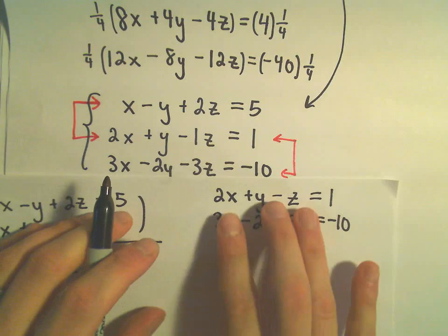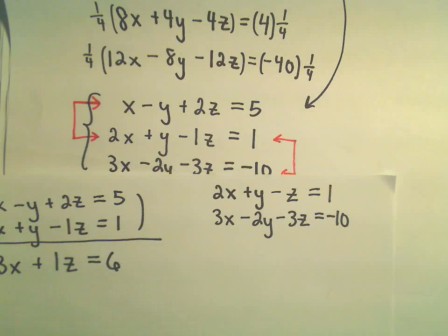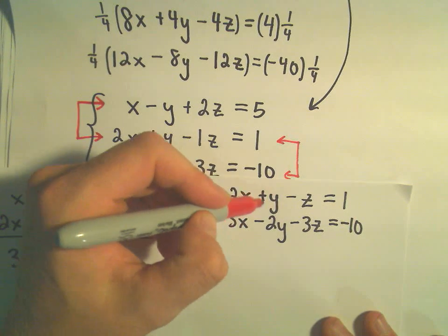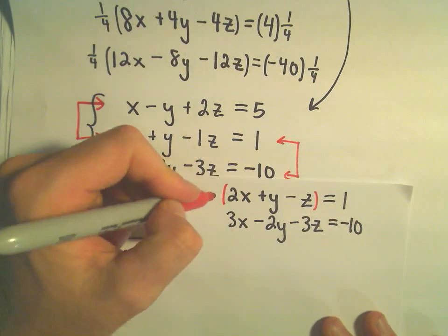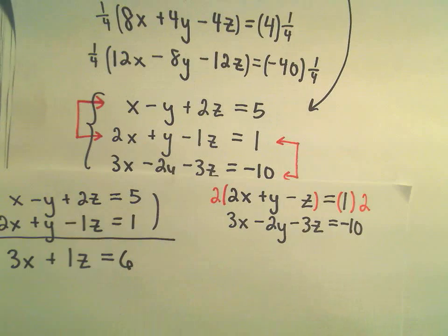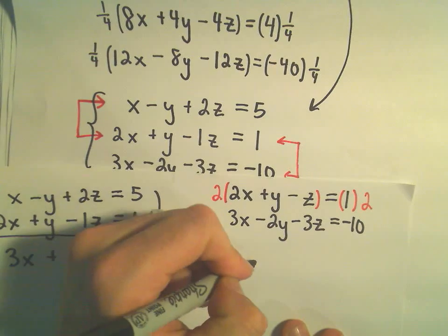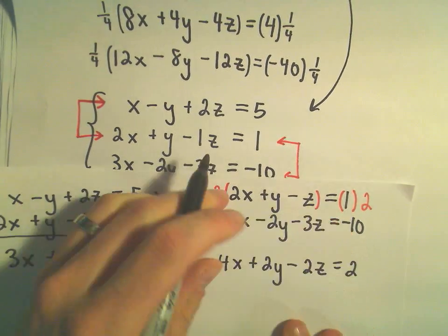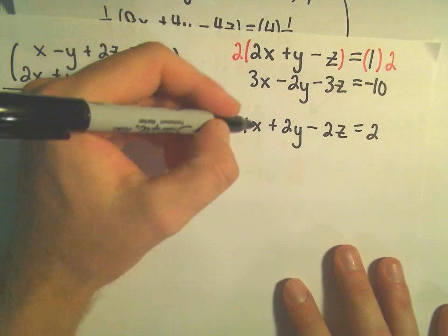Okay, well, notice if we add things up immediately, the y's wouldn't cancel out. We've got a negative 2y in our bottom equation here. I would like to have a positive 2y in my top equation. Well, the only real way to do that is simply to multiply both sides of my first equation by 2. So if we do that, our new first equation will turn into 4x plus 2y minus 2z equals 2. I'm just going to copy down my original second equation.